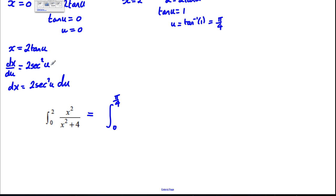Now x² would be this squared, which would be 4tan²(u) over x² plus four. So 4tan²(u) plus four. And instead of dx, we're going to write 2sec²(u)du.